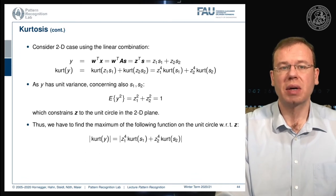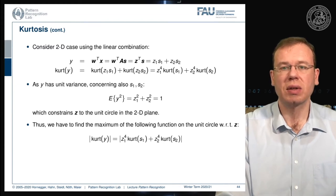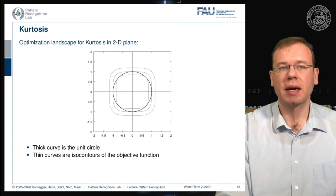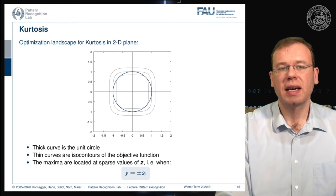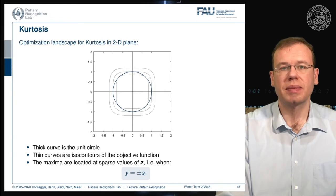We need to find the maximum of the absolute value of the kurtosis on the unit circle with respect to z. The isocontours of the objective function show that the maxima are located at sparse values of z — for example, where y equals plus or minus si.